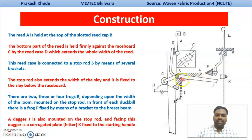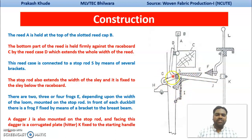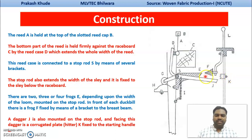The dagger is labeled J, and E is the duckbill. I is your spring system, and G is the anti-friction bowl. These are the three components that have been attached with your stop rod. In front of this dagger, there is a corrugated plate or heater, labeled K. And in front of your duckbill, there is a frog arrangement.